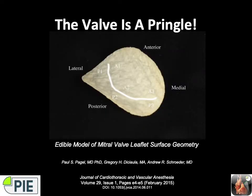The mitral valve is shaped like a Pringle — it's saddle shaped. The anterior-posterior diameter is the front and back of the saddle, the higher parts of the curve. The lateral-medial aspects are the lower parts of the valve. You can imagine the horn of the saddle at the anterior aspect — this is where the aortic valve will be found. When you look at the valve from the posterior aspect, the crescenteric coaptation line between the anterior leaflet and the posterior leaflet makes a smiley face.